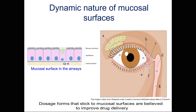What is important to know about these routes of transmucosal drug administration is the dynamic nature of mucosal surfaces. The mucosal surfaces, even though they are different in different parts of our body, they have some similarities, but the main feature of these surfaces is their dynamic nature.